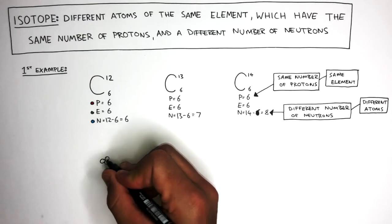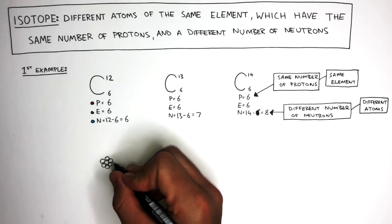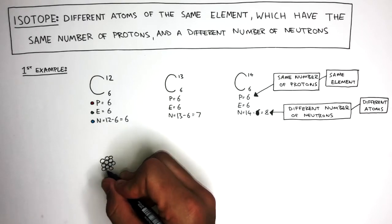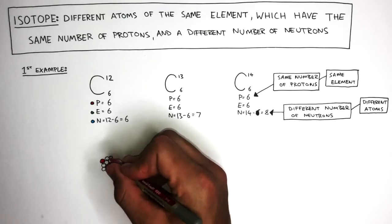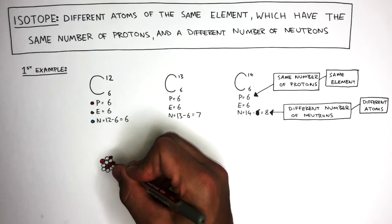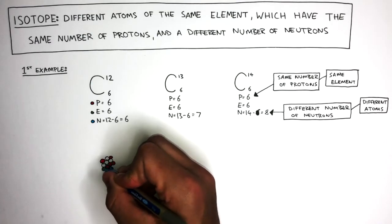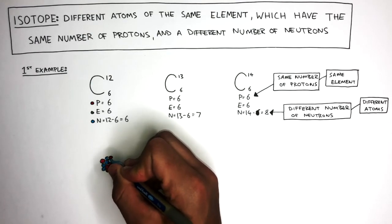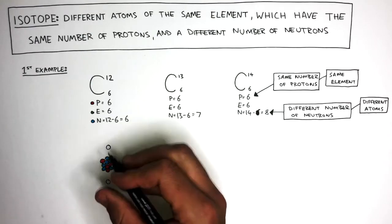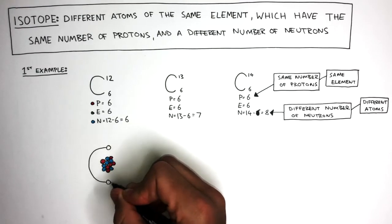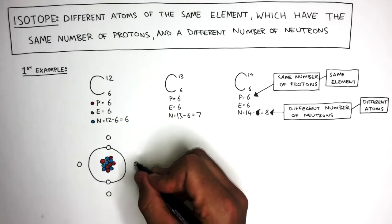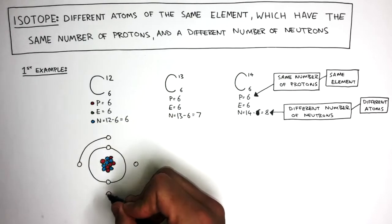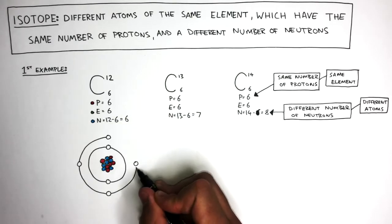These circles represent the protons and neutrons in the nucleus. In a carbon-12 atom, there are six protons and six neutrons. In each isotope there will be six electrons — two in the first shell and four in the second shell.